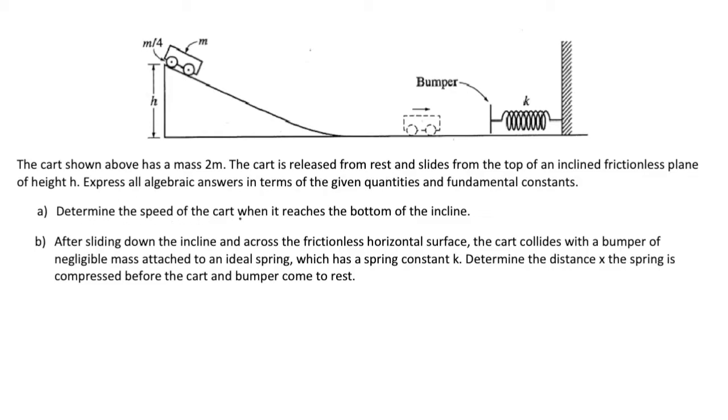In part a, we determine the speed of the cart when it reaches the bottom of the incline here. And in part b, after sliding down the incline and across the frictionless horizontal surface, the cart collides with a bumper of negligible mass attached to an ideal spring which has spring constant k. Determine the distance x the spring is compressed before the cart and bumper come to rest.